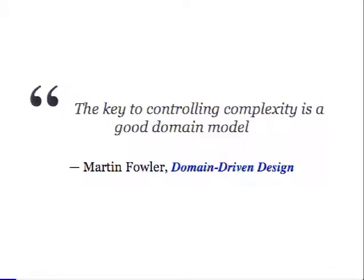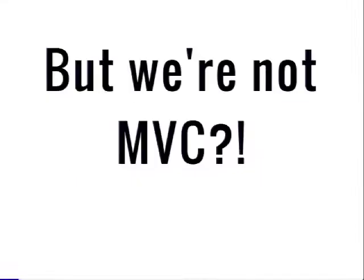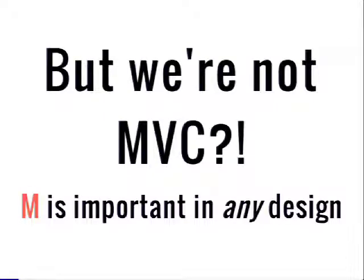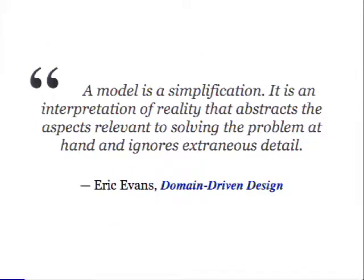When people talk about object-oriented programming, it's described as a tool to manage complexity. But we somehow took that and made things more complex. I really like this quote from Martin Fowler: the key to controlling complexity is a good domain model. That's not a word we say often here. Just because you may not have the M and the C doesn't mean you don't have the M — everyone has the M. If you are doing anything with objects, you need a domain model.